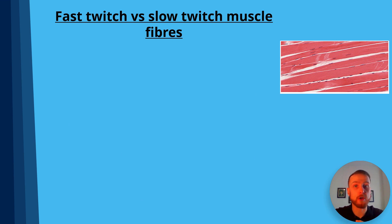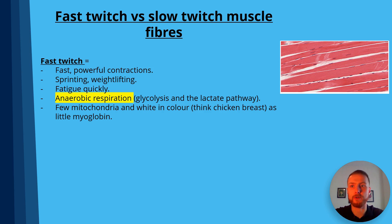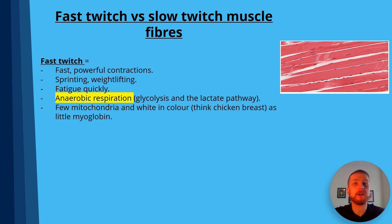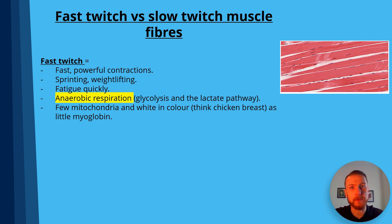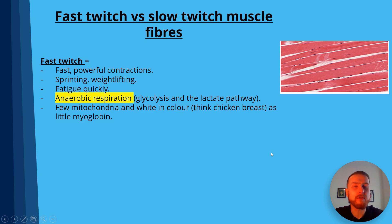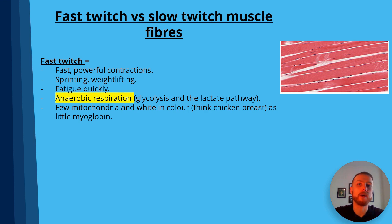Looking at fast versus slow twitch muscle fibres — which are two types of skeletal muscle — fast twitch allows for fast, powerful contractions. Think about sports like sprinting and weightlifting; they will be predominantly using fast twitch muscle fibres. They fatigue rapidly and only use anaerobic respiration, which isn't as efficient as the electron transport chain in aerobic respiration. They also have few mitochondria and are more whitish in colour — think of chicken breast, the pectoral muscle of a chicken, because it doesn't have much myoglobin, which is the oxygen-carrying molecule in muscles.